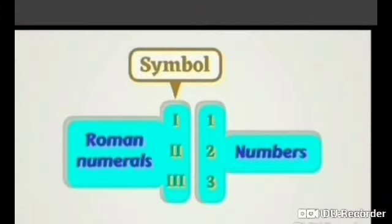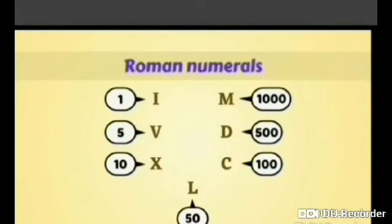Roman Numerals follow symbolic representation for numbers. Some of the Roman Numerals are: I is used for 1, V is used for 5, X is used for 10, L is used for 50, C is used for 100, D is used for 500, and M is used for 1000.